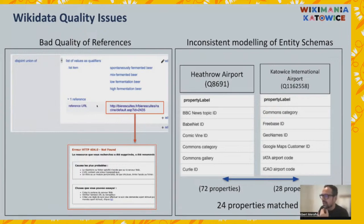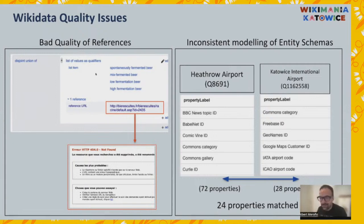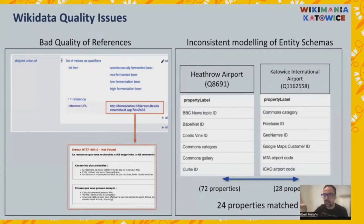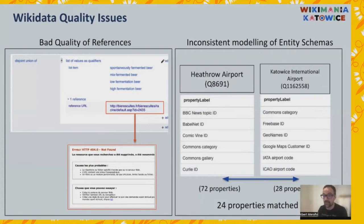Let's look at references first. Here is a very classic example of what can go wrong with references in Wikidata supporting statements and claims. We have something extracted from Q44 — the Q item for beer. Here we have a claim with a reference URL supporting the statement, but unfortunately that URL gives back a 404 not found error — in French — which is not the language configured as the user's preferred language for that item. That means that reference can no longer really support that statement.